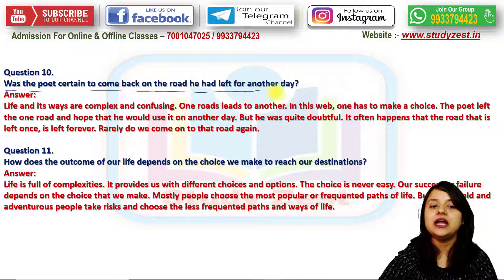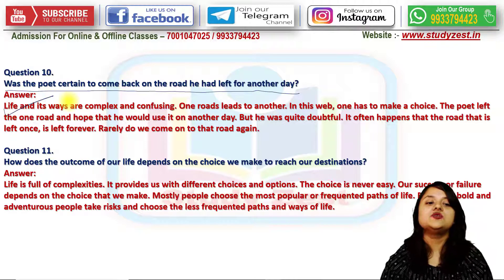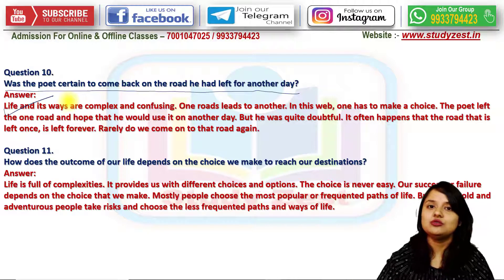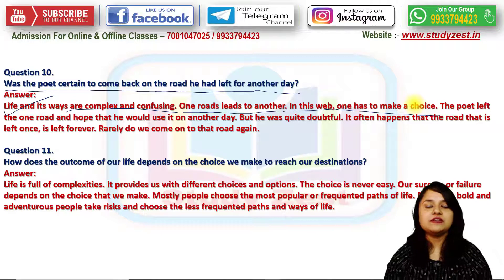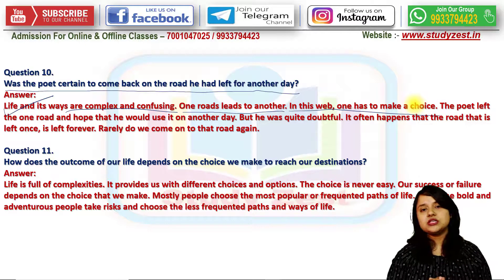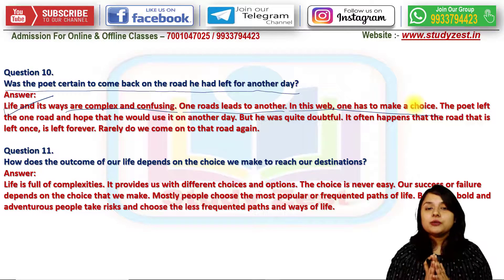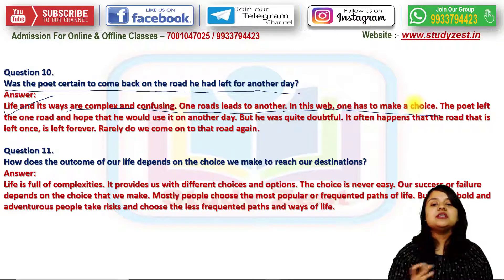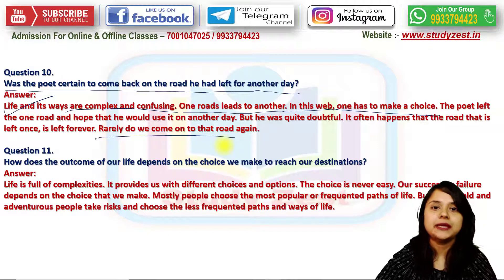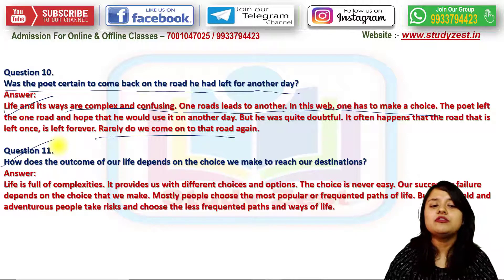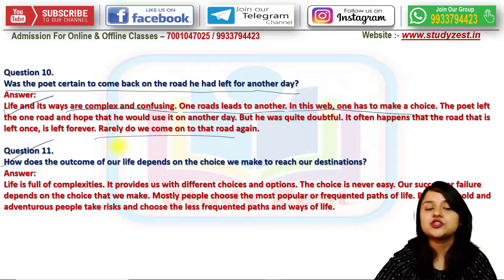Was the poet certain to come back on the road he had left for another day? Life and its ways are complex. One road leads to another in the web of life, and one has to make a choice. The poet left one road and thought that at some point in his life he might have the opportunity to come back and go through the path he rejected. But he was doubtful — it often happens that the road left once is a road we do not come back to again.